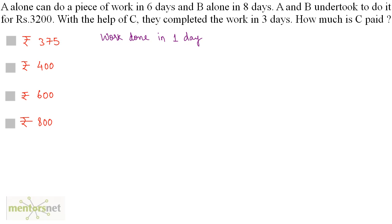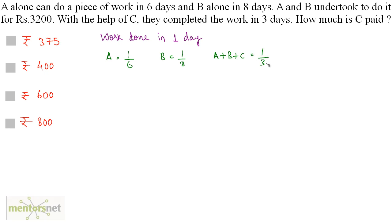Let us calculate the work done by the respective parties in 1 day. In 1 day, A will do 1/6 of the work, because A can complete the work in 6 days. Similarly, B will do 1/8 of the work. With the help of C, they completed it in 3 days, so A plus B plus C equals 1/3 — the work done by all 3 people in 1 day.